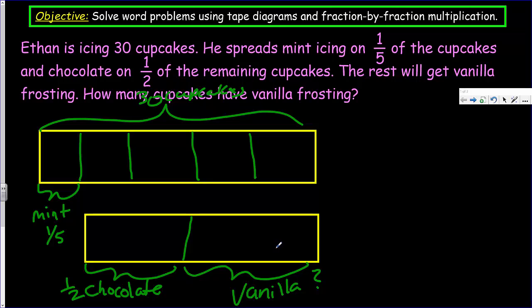Well, what are some other things that we know? Obviously, we're trying to find how many cupcakes have vanilla frosting. So let's go ahead and look at this tape diagram and think for a second. We have 30 cupcakes. And here we know that we have one fifth, have the mint icing.